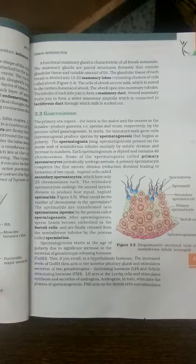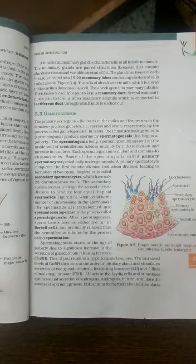Spermatogenesis starts at the age of puberty due to significant increase in the secretion of GnRH. If you recall, this is a hypothalamic hormone. The increased level of GnRH will act on the anterior lobe of the pituitary.